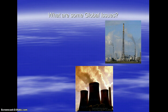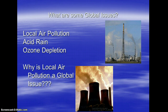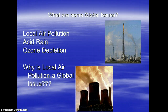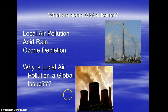So what are some global issues? We're going to talk about air pollution — local air pollution versus acid rain versus ozone depletion. Why is local air pollution a global issue? Your answer stems from the fact that the atmosphere is dynamic and moving around the globe. What is emitted in one location will not necessarily stay there — the worst pollution often falls in areas that are not even emitters. Definitely all countries need to be on board when addressing this issue.